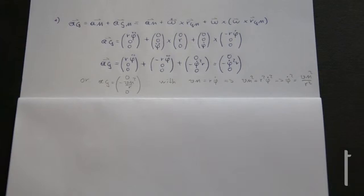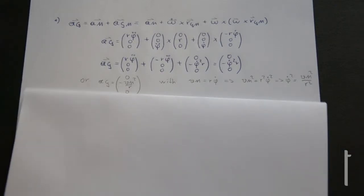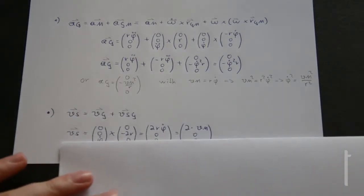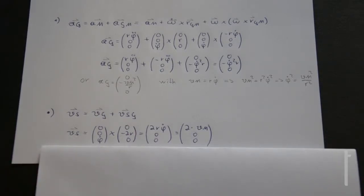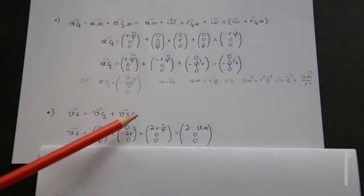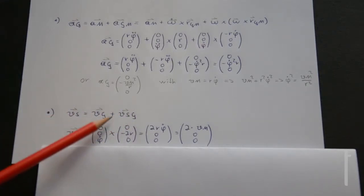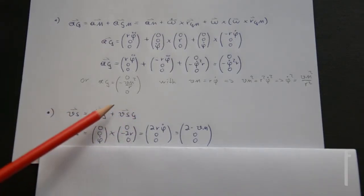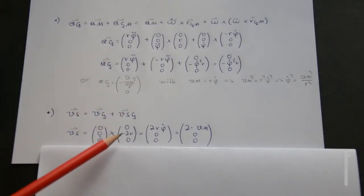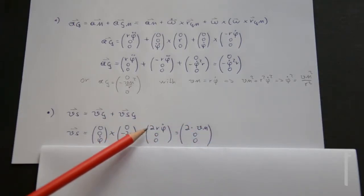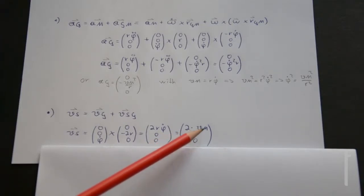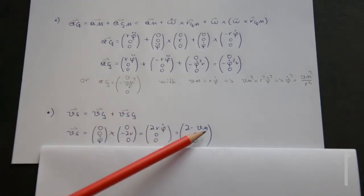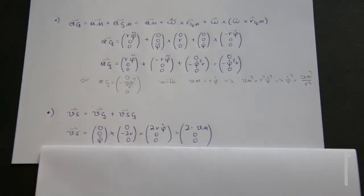Finally, we are interested in the velocity of point S. Writing the kinematic relationship: vS = vG + vSG, and since vG = 0, we are left with vSG = omega cross r_SG. The vector from G to S goes in the negative y-direction by R. After calculation, the velocity of point S is exactly two times the velocity of the center point M, and it also points in the positive x-direction.